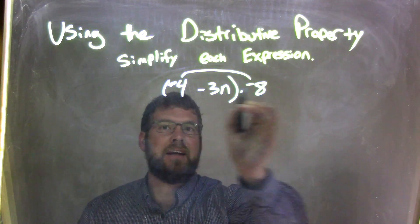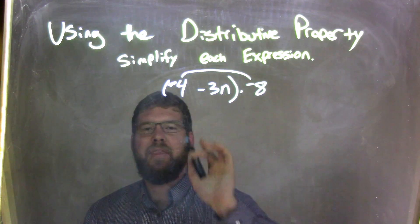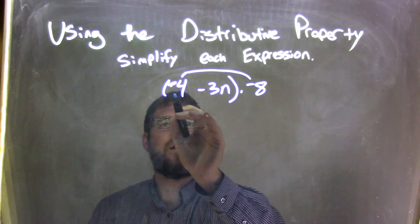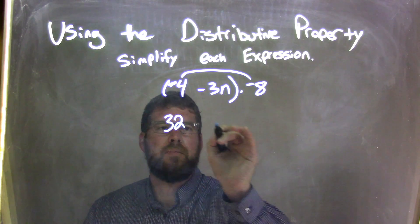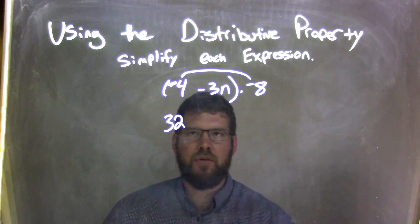So now we have negative 8 times negative 4. That comes down to be a positive number. Two negatives make a positive, and that positive number is 32.